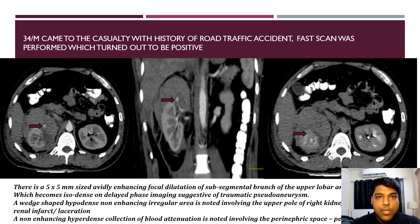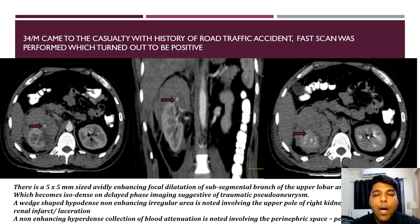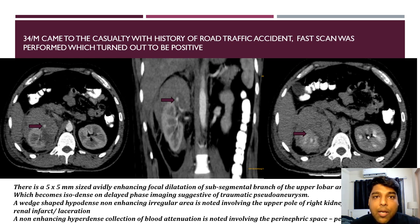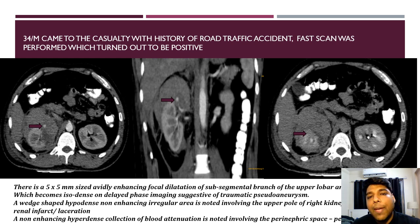Case 1: A 34-year-old male came to casualty with history of road traffic accident. FAST scan was performed which turned out to be positive. There is a 5x5 mm sized avidly enhancing focal dilatation of a sub-segmental branch of the upper lobar artery of the right kidney, which becomes isodense on delayed phase imaging, suggestive of traumatic pseudoaneurysm. A wedge-shaped hypodense non-enhancing irregular area is also noted along the upper pole of the right kidney, suggestive of renal infarct or laceration. A non-enhancing hyperdense collection of blood attenuation is also noted involving the perinephric space, suggesting a perinephric hematoma.